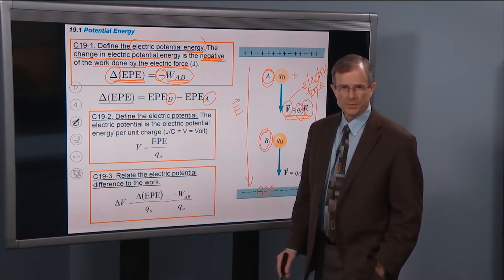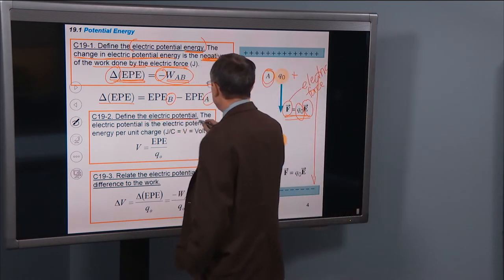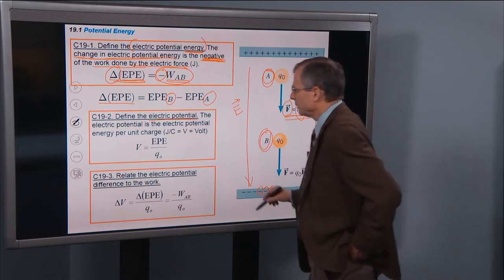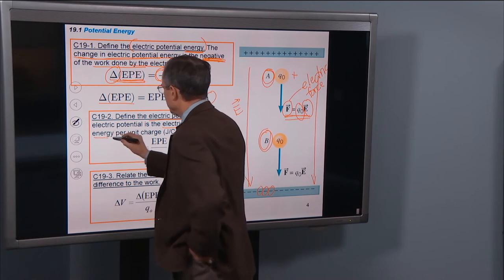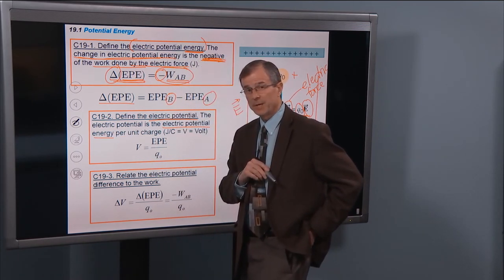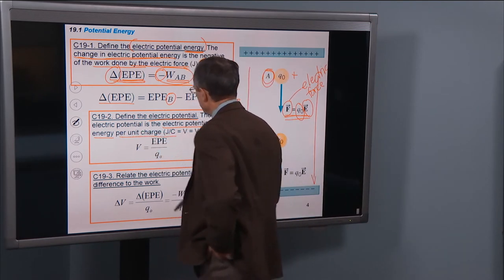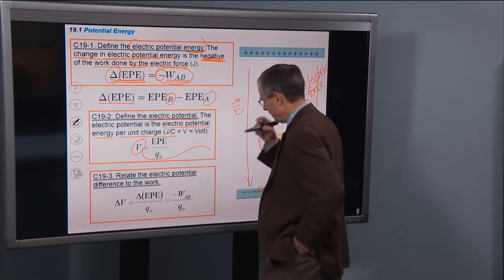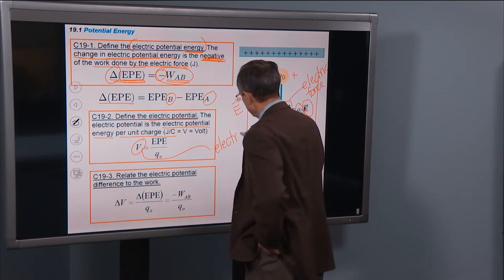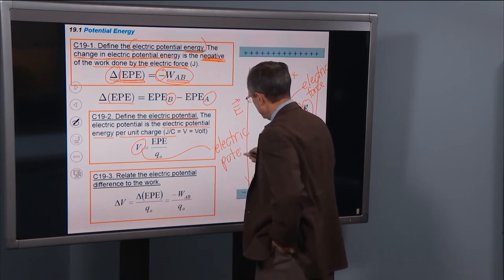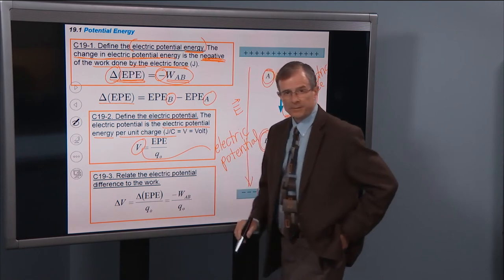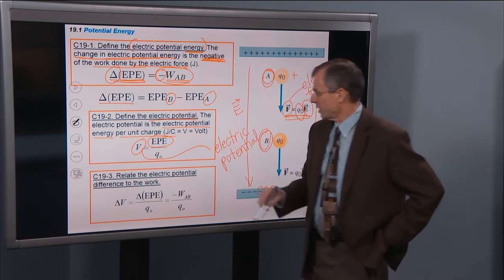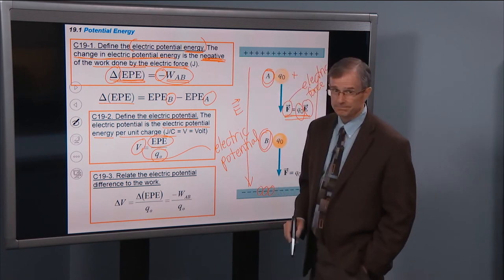Now let's define the electric potential — we've left the word energy off. The electric potential is the electric potential energy, EPE, per unit charge, divided by the charge. The electric potential is denoted by the letter V, and it is the electric potential energy divided by the charge Q. That's it — it's just a definition.